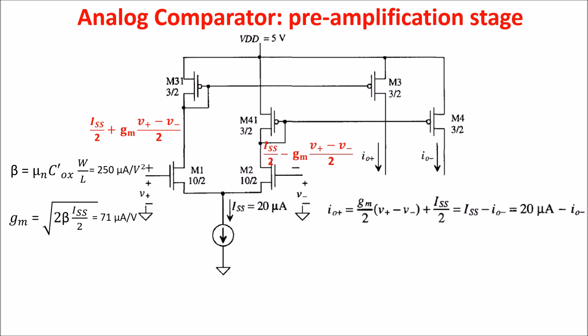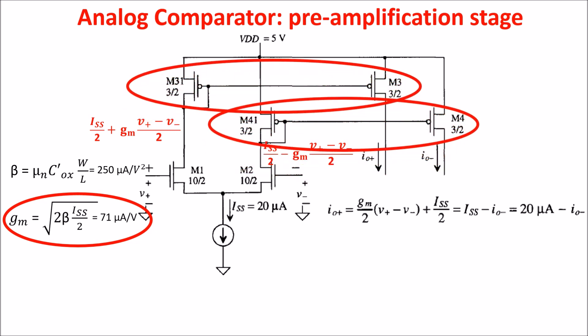The gain of the stage is given by the transconductance GM, but also by the mirror load. Because making larger M4 and M3 in respect to M41 and M31, we can increase the gain of the stage.